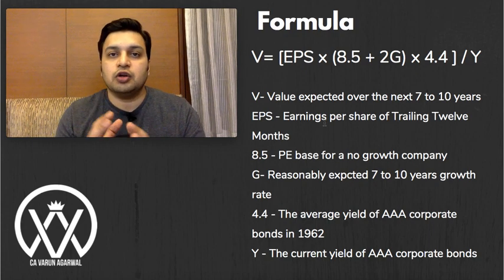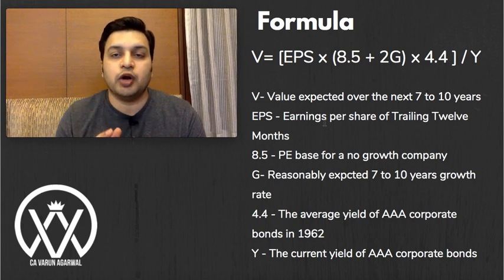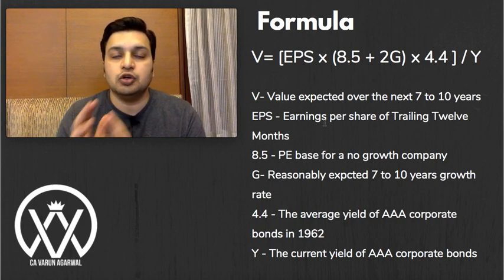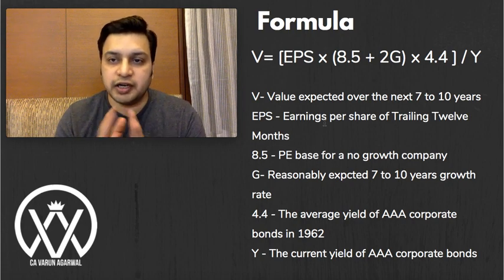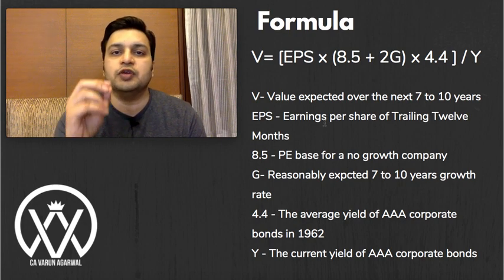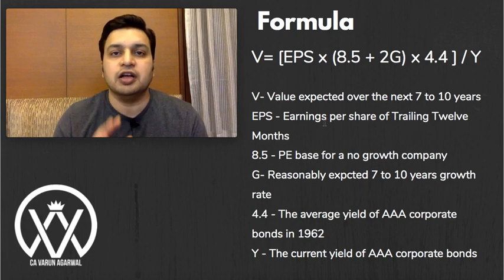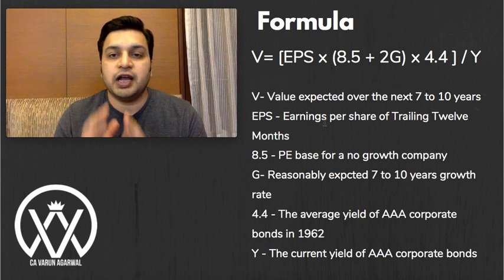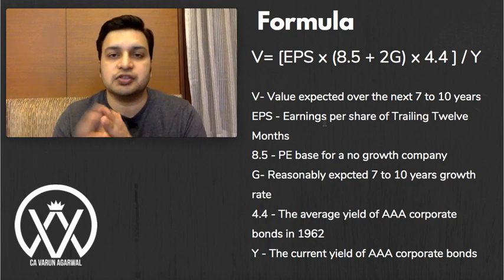The formula to calculate intrinsic value is: V = EPS × (8.5 + 2g) × 4.4 / Y. This may look a little complicated at first glance, but I will simplify it with two examples so you can easily understand and calculate on your own after this video. V is the intrinsic value expected over the next 5 to 10 years — we are trying to calculate the value the share may have in the coming years.